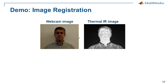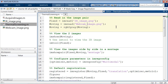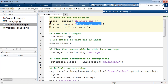In this demonstration, I'll show how to work with a webcam image and an infrared image. The goal is to register the two images together to measure body temperature. Because the inner corners of the eye are the most accurate place to measure body temperature, we want to register these images so we can run an algorithm on the webcam image to find the eye locations and then correlate those exact locations on the infrared image to read the correct body temperature.